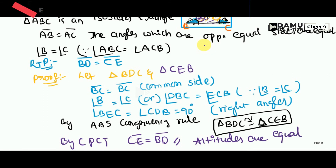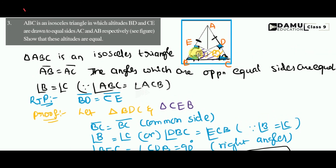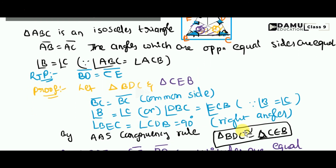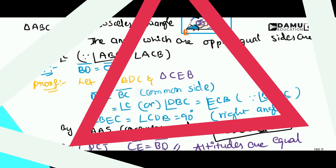Why? Because CE and BD are the altitudes acting as sides in the two triangles BDC and CEB. So for those two triangles, these two sides are the altitudes. We have to think about any two triangles, use a congruency rule, and then by CPCT we can write that the two sides are equal. Thanks for watching. Please subscribe.